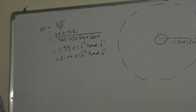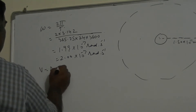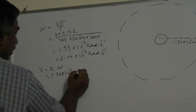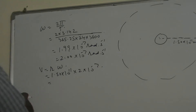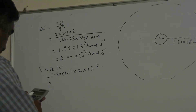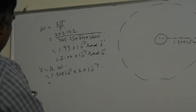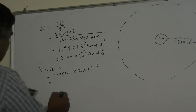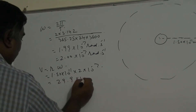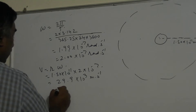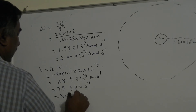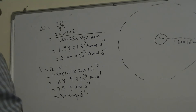The linear speed of the Earth around the Sun: V equals R times omega, where R is 1.50 into 10 to the power 11 meters and omega is 2 into 10 to the power minus 7 radians per second. This comes out to be 29.9 into 10 to the power 3 meters per second, or approximately 30 kilometers per second — that is the linear orbital speed of the Earth.